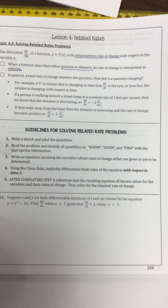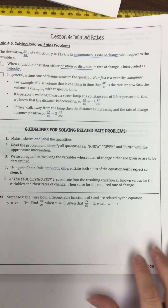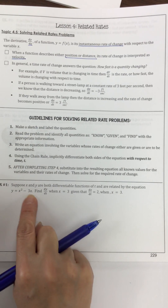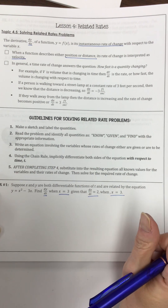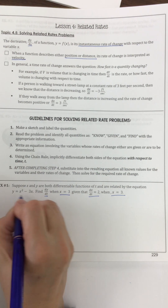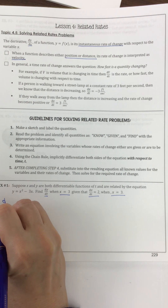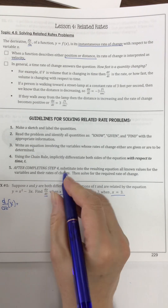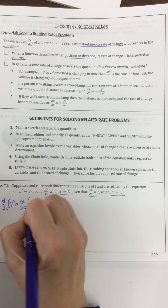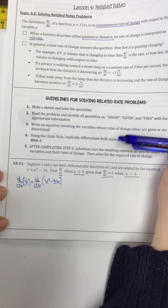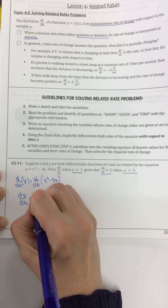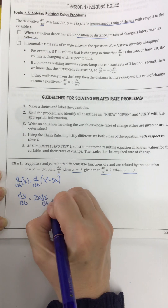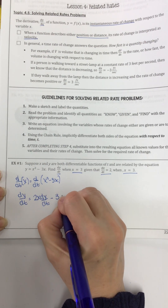Let's look at Example 1. Suppose x and y are both differentiable functions of t and are related by the equation y equals x squared minus 3x. Find dy/dt when x is 3, given some other values. The first thing we need to do is take the derivative with respect to time. So d/dt of y equals d/dt of x squared minus 3x. We get dy/dt equals 2x dx/dt minus 3 dx/dt.